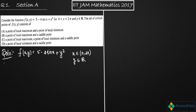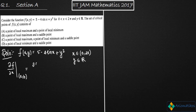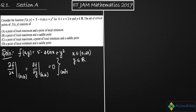A point (a, b) is said to be a critical point for the given function f(x,y) if ∂f/∂x at (a, b) equals zero and ∂f/∂y at (a, b) equals zero. This is the definition for the critical point.